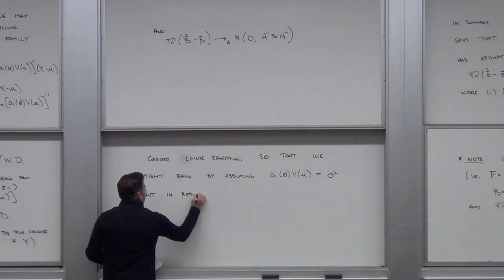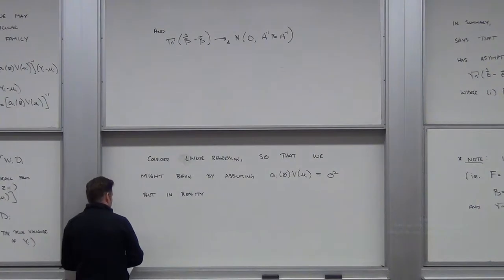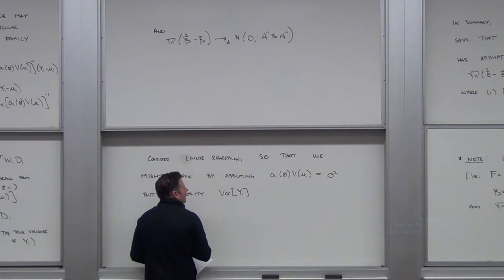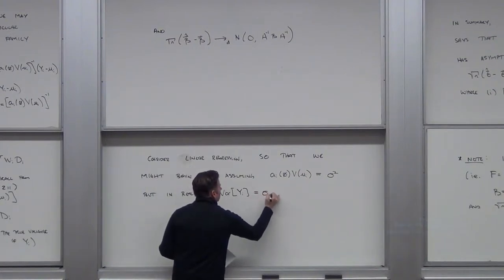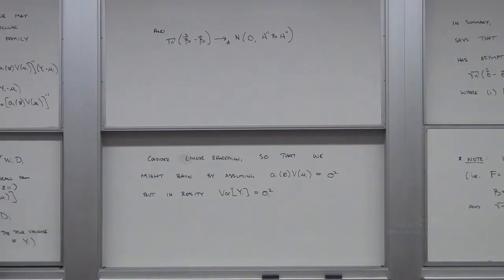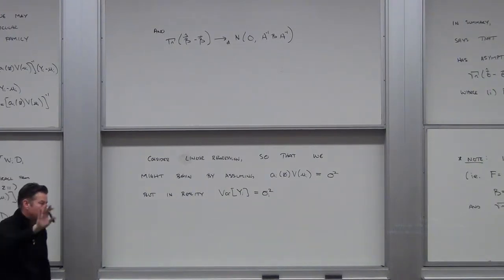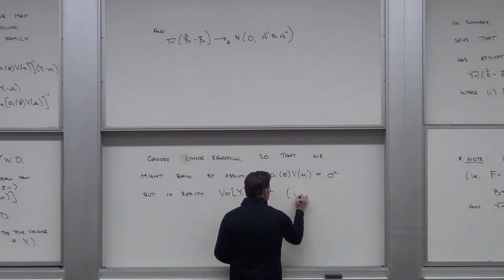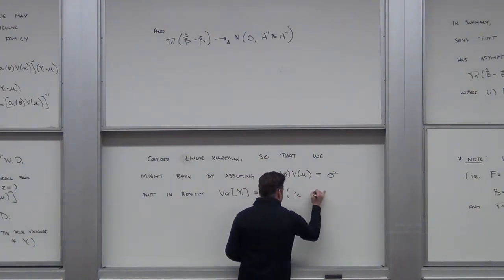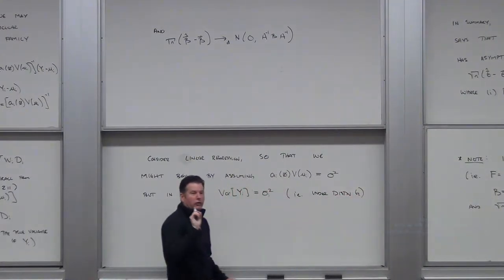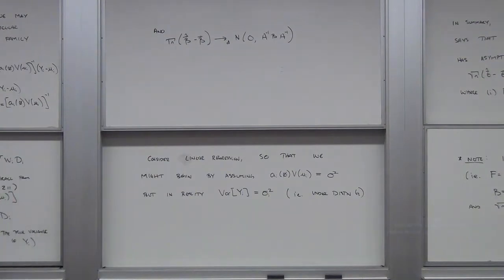Now you guys see why I've been pushing you on these things. Suppose in reality, though, the true variance of y_i is equal to some sigma_i squared — so you've got heteroscedasticity. In other words, it is changing as i is changing. So that would be like under your distribution g — that's the truth.